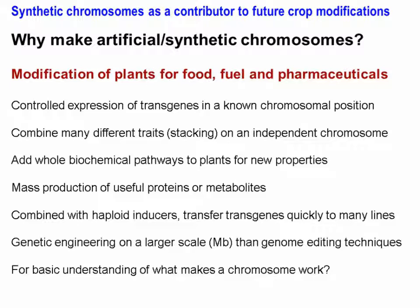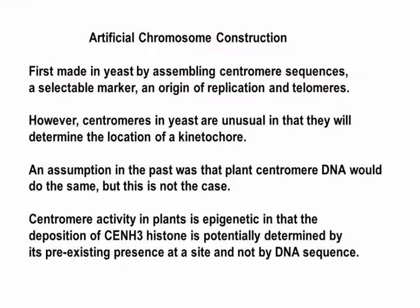Potentially going forward, one could add whole biochemical pathways for new properties to plants or enable mass production of useful proteins and metabolites. We will also talk about haploid inducers and how one can use engineered mini-chromosomes for transferring transgenes to new lines. This type of genetic engineering is on a much larger scale than the gene editing techniques you'll hear about in the second part of the webinar. We can potentially work at the megabase level to add new properties to plants, and it's also useful for our basic understanding of what makes a chromosome work.